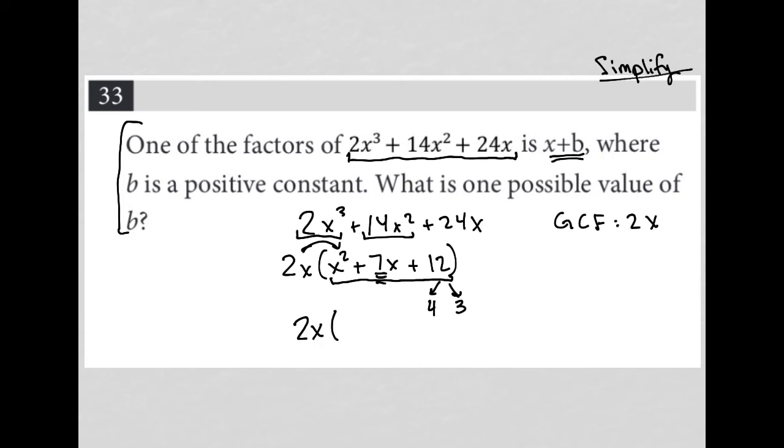I still have the 2x in front, but this x² + 7x + 12 will turn into 2 binomials, which will be x+4 and x+3. So there is my fully factored form of the expression,